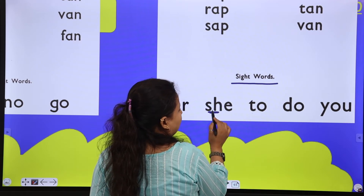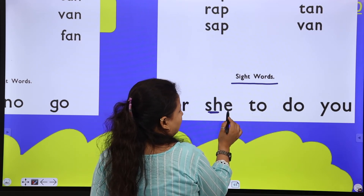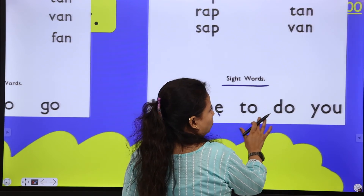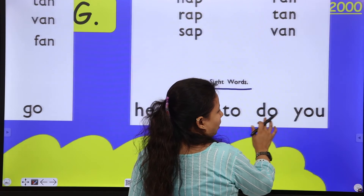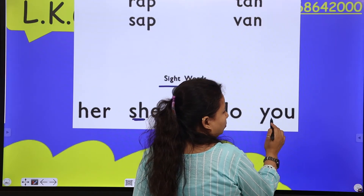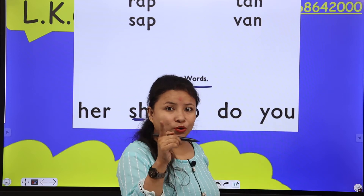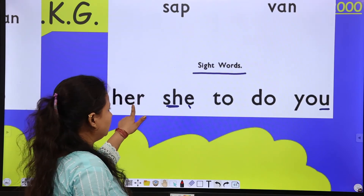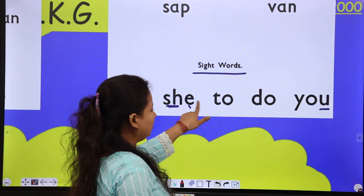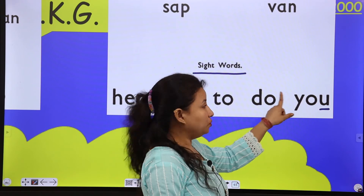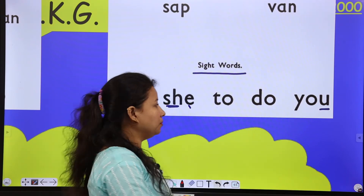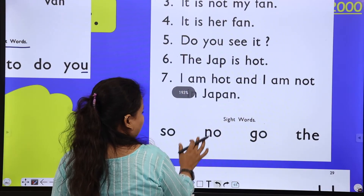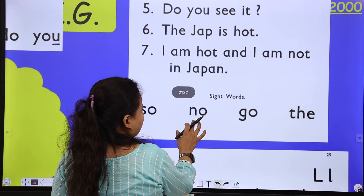'She' and it makes the sound 'ee' — she, to, do. And wow, this is 'you' — this is 'you.' So: she, to, do, and you. Now page number 25 — page number 25 is here, again some words have come.